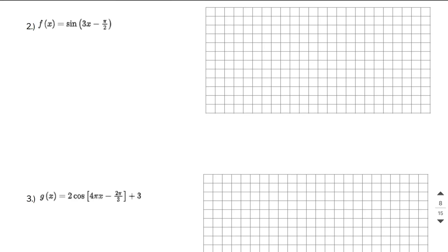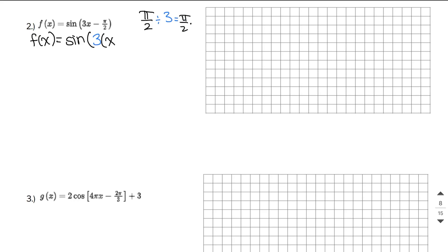In the next example, we need to remember to factor out whatever the k value is. The k value here is 3, so I'm going to factor out that 3. When you factor things out by common factoring, you divide it out. So I take π/2 and divide by 3, which is the same as π/2 times 1/3, giving π/6. So when I factor out the 3, I get minus π/6.